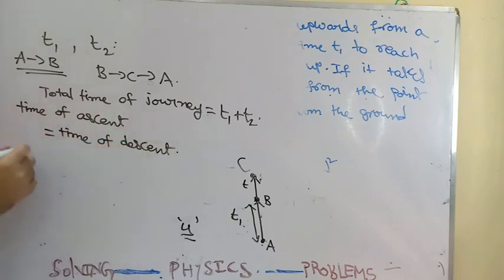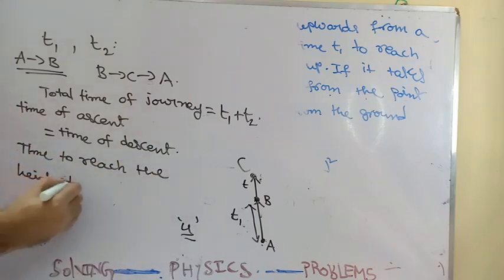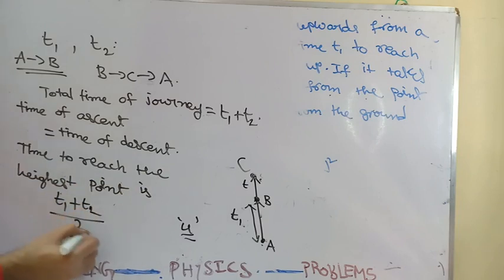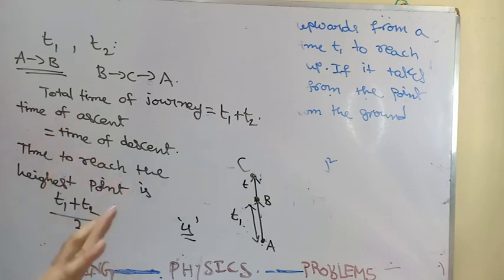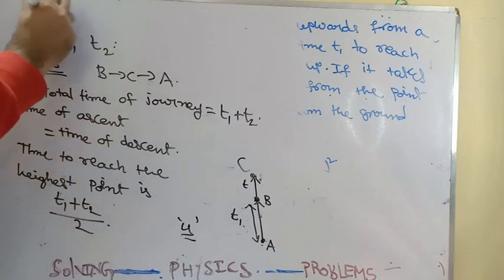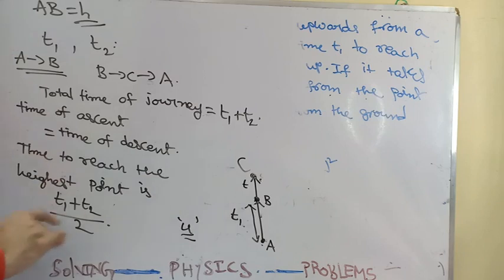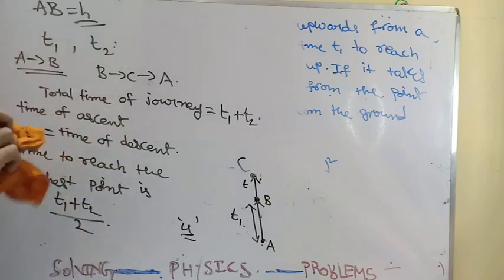Since time of ascent equals time of descent, the time to reach the highest point (A to C) is (t1 + t2) / 2. We need to find the height AB — assume it is h. This is what we have to find. Now we need to establish a relation between the time of ascent or descent and the velocity.